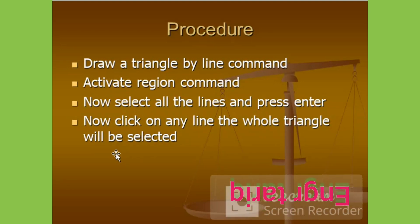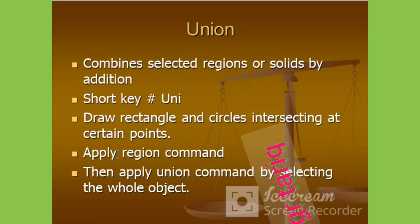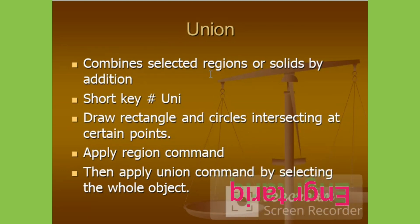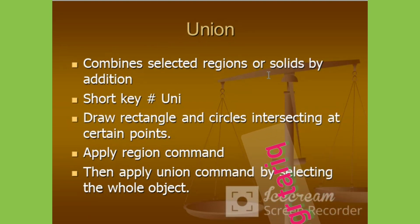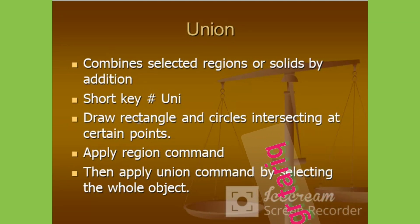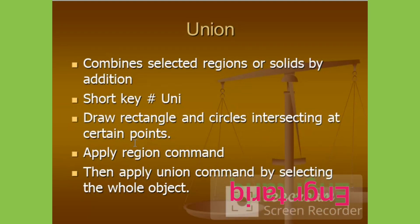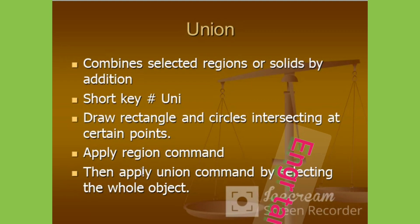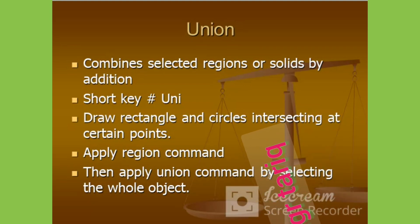This is Union. It combines selected regions or solids by addition. The shortcut is UNI. Draw a rectangle and circle intersecting at certain points, apply the region command, then apply the union command by selecting the whole object.